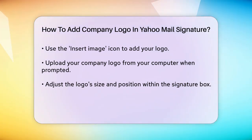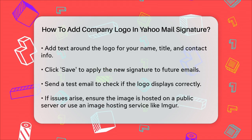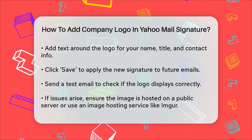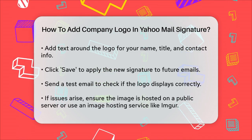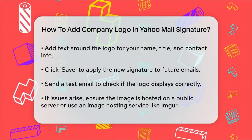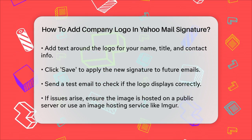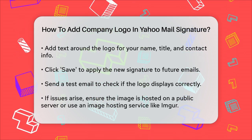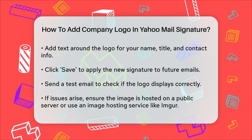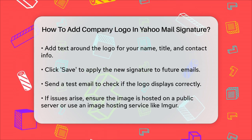To add the logo, click on the Insert Image icon, which looks like a small picture. This icon is usually found in the toolbar above the text editor. When you click on it, you'll be prompted to upload your image from your computer. Select your company logo and upload it. Once the logo is uploaded, you can adjust its size and position within the signature box. You can also add text around the logo to include your name.